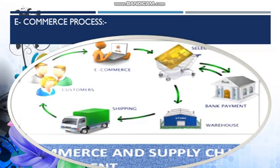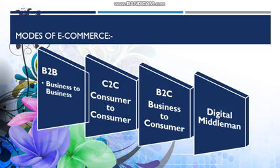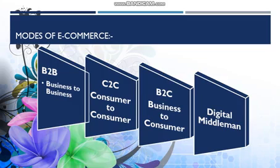We are going to see the different modes of e-commerce. There are basically 4 modes of e-commerce. The first is B2B — business to business. The second mode is C2C — consumer to consumer. The third is B2C — business to consumer. And the last one is also a business-related mode. We are going to see each and every mode in detail.